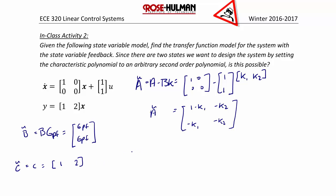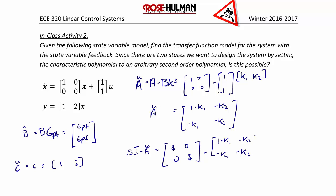So the first thing we find is sI minus A-tilde, which is [s, 0; 0, s] minus [1 minus K1, negative K2; negative K1, negative K2], which equals [s minus 1 plus K1, K2; K1, s plus K2].